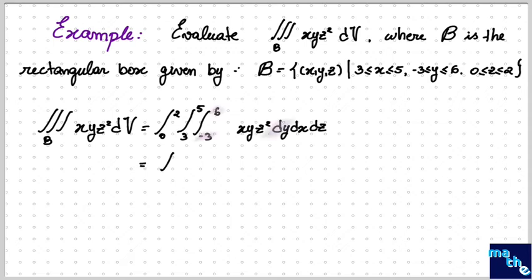We already know, we integrate first in respect to Y, so we get the double integral from 0 until 2 of Z, and 3 until 5 of X of our function XZ² of the integral of Y evaluated for the value 6 and -3, dx dz.